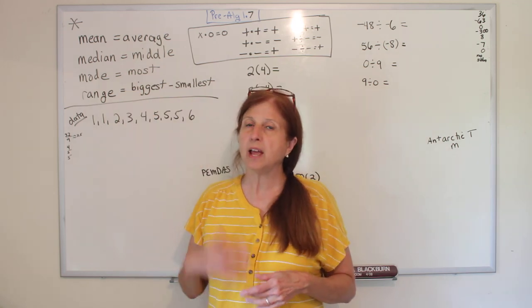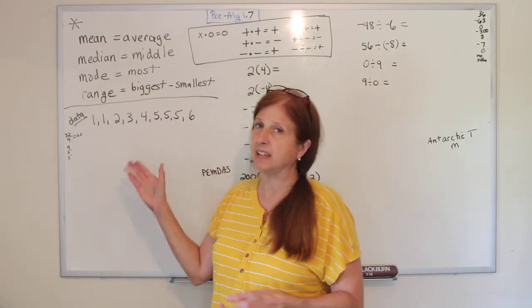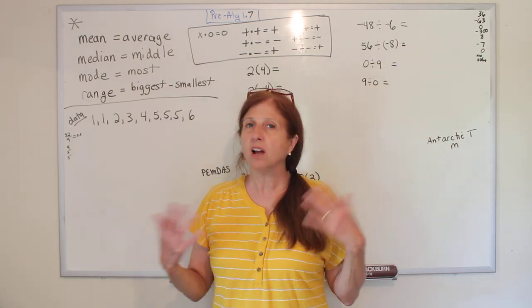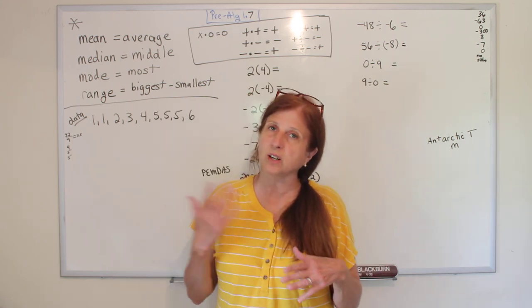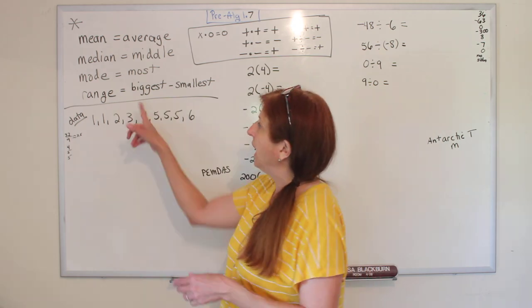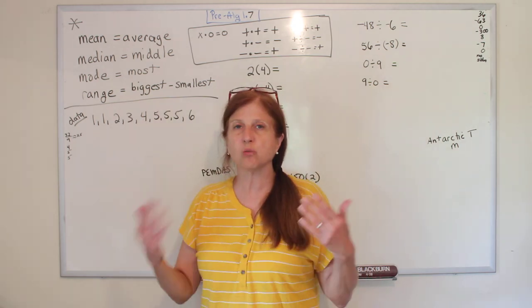And then the next one is mode, and mode means most - the thing that's repeated the most. Not all sets of data have modes, but if they have one, it's whatever's the most. And then the last one is range.